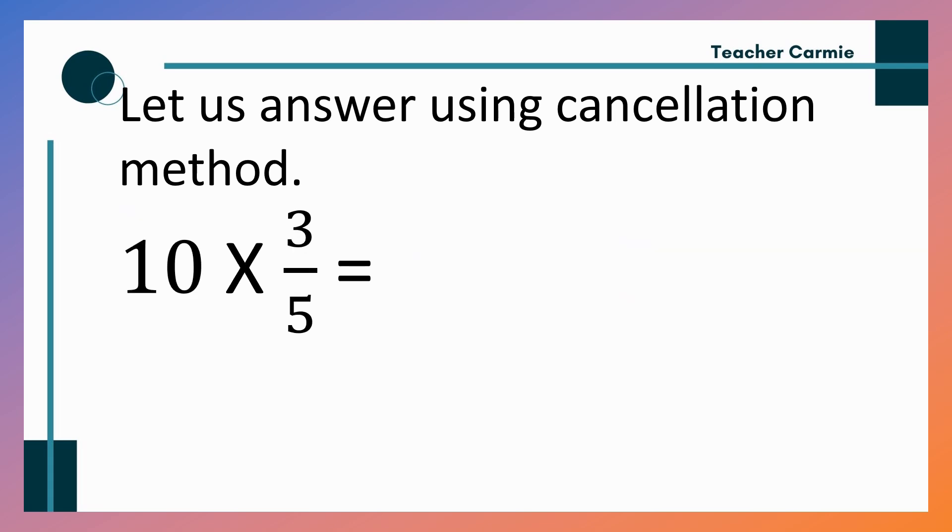Let us answer another example using the cancellation method. Whole number with a fraction. So, 10 times 3 fifth. So, 10 pwede natin yung lagyan ng over 1 para hindi kayo malito. Then, 10 over 5. Can we cancel? Of course, yes. We can cancel it. It is both divisible by 5. So, 10 divided by 5 equals 2. 5 divided by 5 equals 1. Then, 3 and 1. So, we will multiply 2 times 3 equals 6 over 1. So, 6 over 1 or 6, whole number 6.